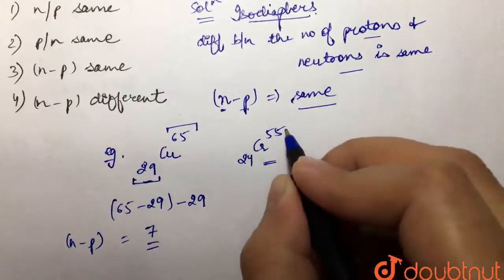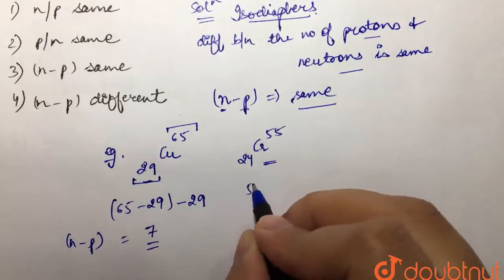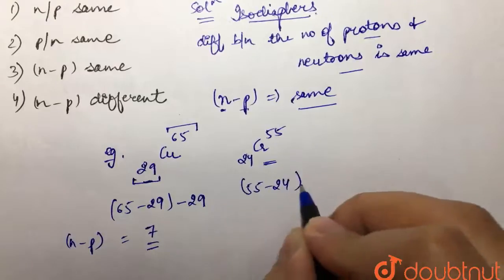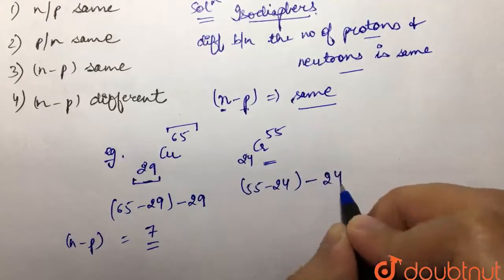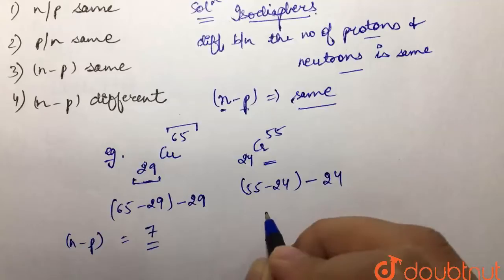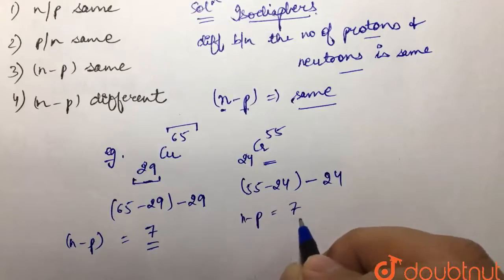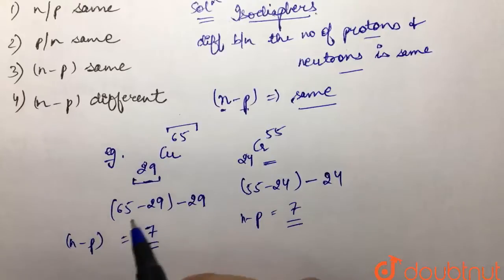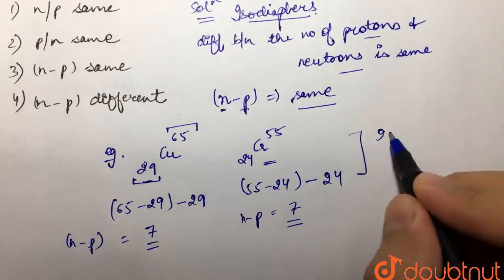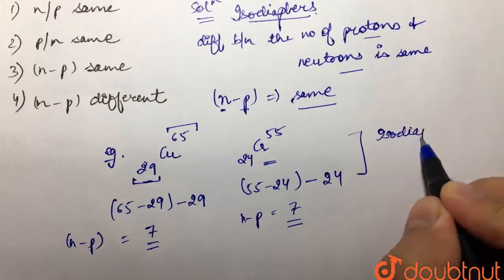Now in case of chromium, the number of neutrons would be 55 minus 24, and then minus the number of protons which is 24. So over here as well we get an n minus p value of 7. They have the same n minus p value and that is why we can say that these are isodiaphors.